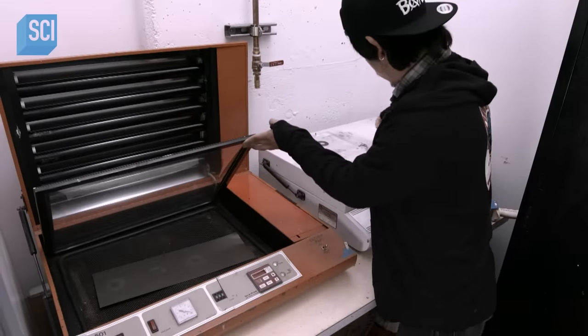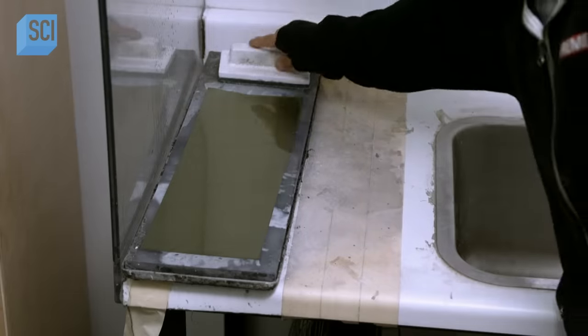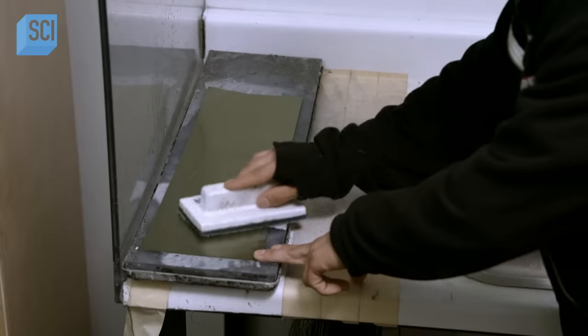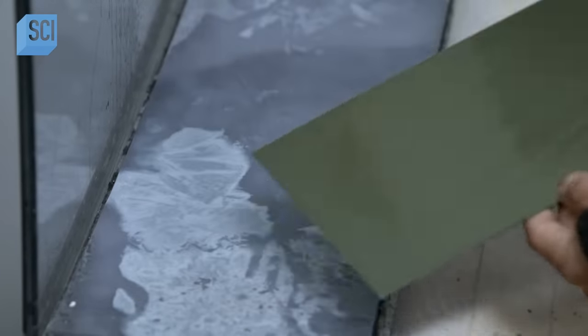You can see the image now exposed very faintly on the printing plate. He applies a solution that removes unexposed emulsion and, in the process, etches the image into the printing plate.